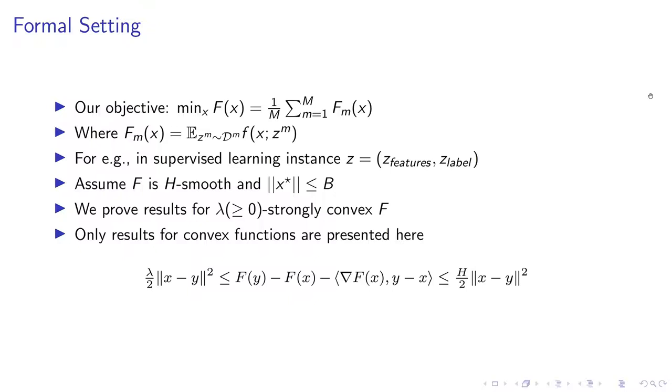Our objective looks something like this. Each of these machines has an objective F_m and the overall objective is an average of them. We want to minimize this overall objective and on each machine, the objective looks something like this. It's an expectation with respect to a random variable. This random variable is sampled from a machine specific distribution D^m. This random variable, for instance, could just be a marker of a training point. So, z equals (z_features, z_label). And the overall objective on that machine is just the expectation overall the training points I could have sampled.